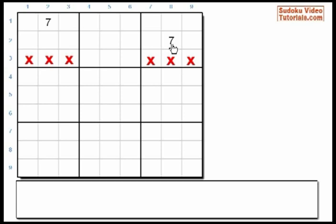So we can easily conclude that the third 7 must go in any of these 3 cells which are part of Box 2. Scanning has enabled us to narrow down the choices to any one of these 3 cells, and that's exactly what scanning is.